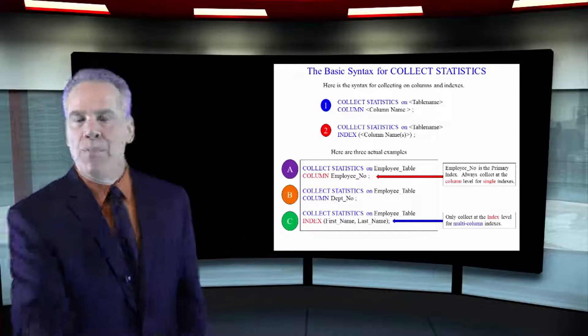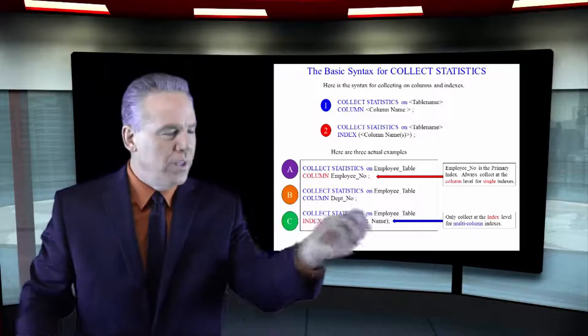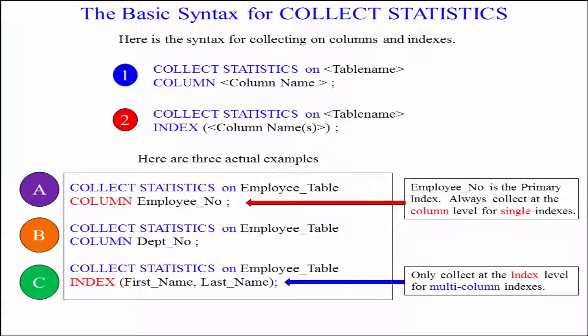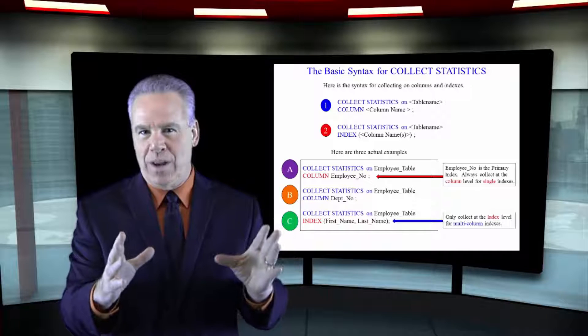And in our third example, this is exactly where you would collect statistics on employee table. So, index, open paren, first name, last name, close paren.